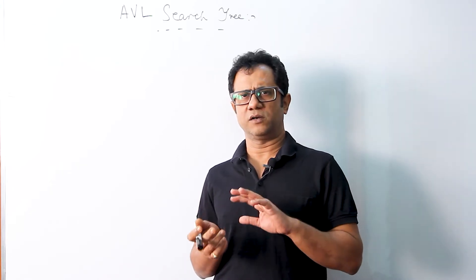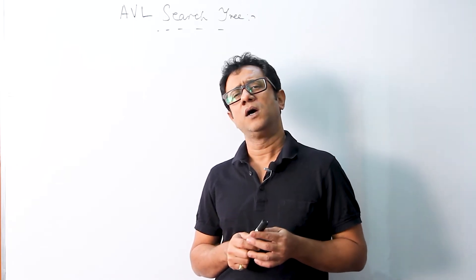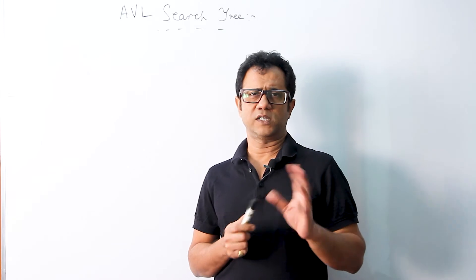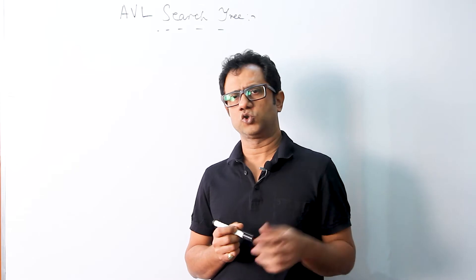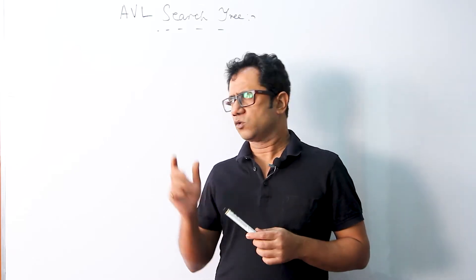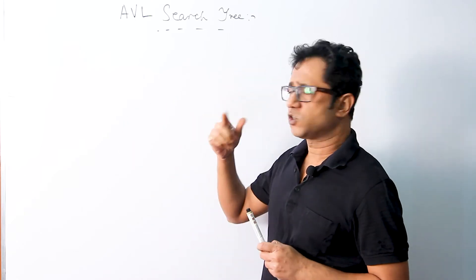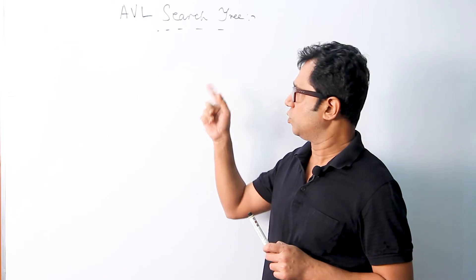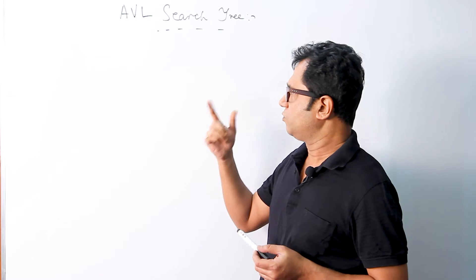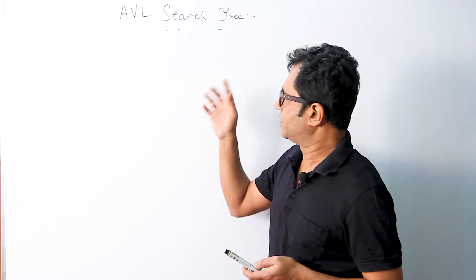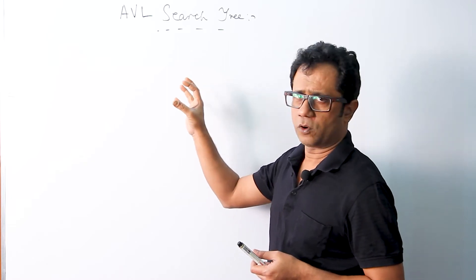R minus one rotation is a bit different from the other two rotations described in previous videos, that is R zero rotation and R one rotation. They are quite similar to each other, but the process of R minus one rotation is a bit different from those two. So leaving those aside, we are now going ahead with the explanation of the R minus one rotation.